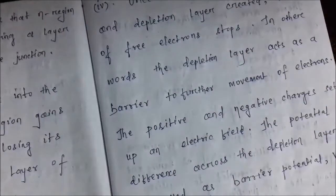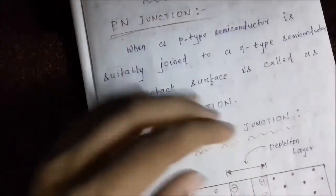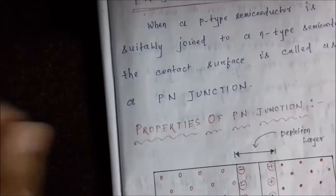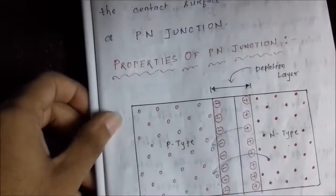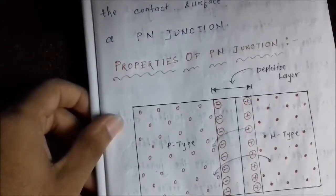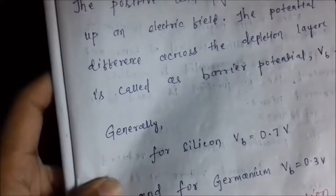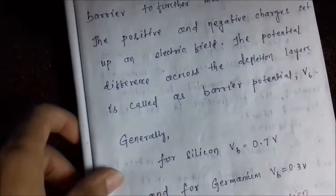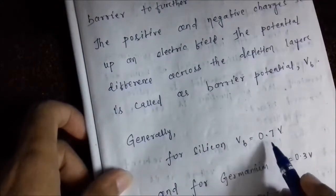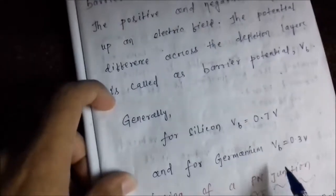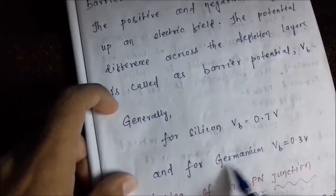As a result of this barrier potential, there is no current flow in the PN junction when there is zero external voltage applied across it. This barrier potential is generally about 0.7 volts for silicon and 0.3 volts for germanium.